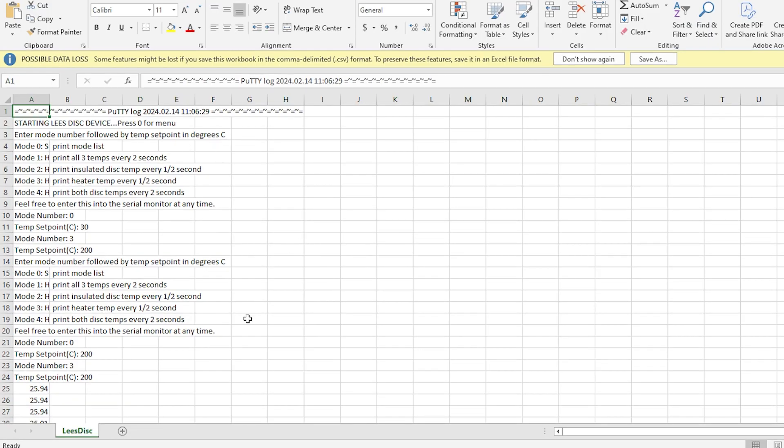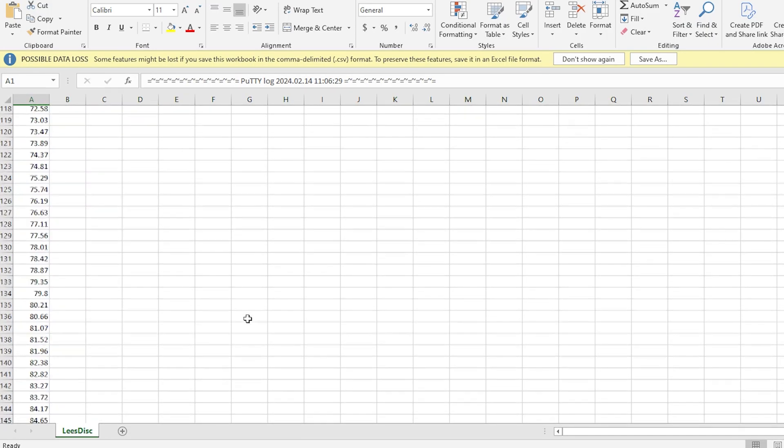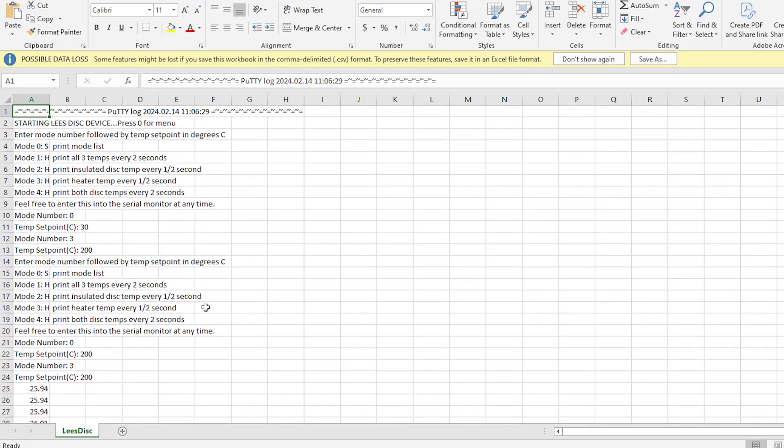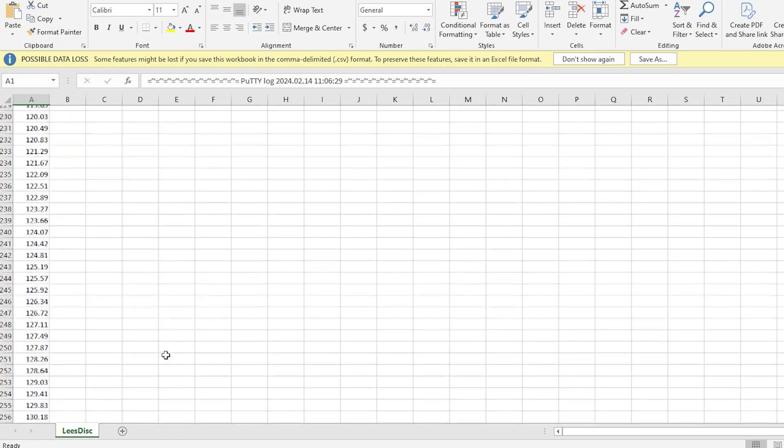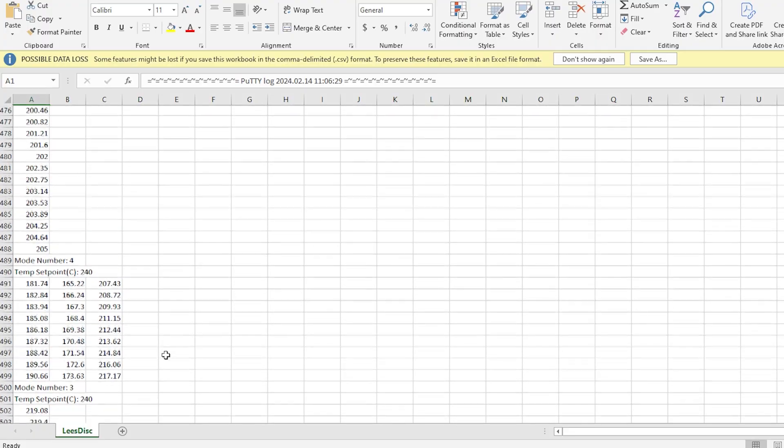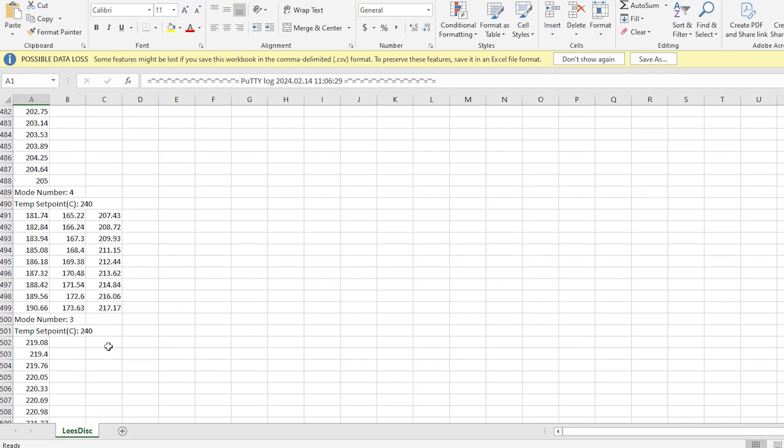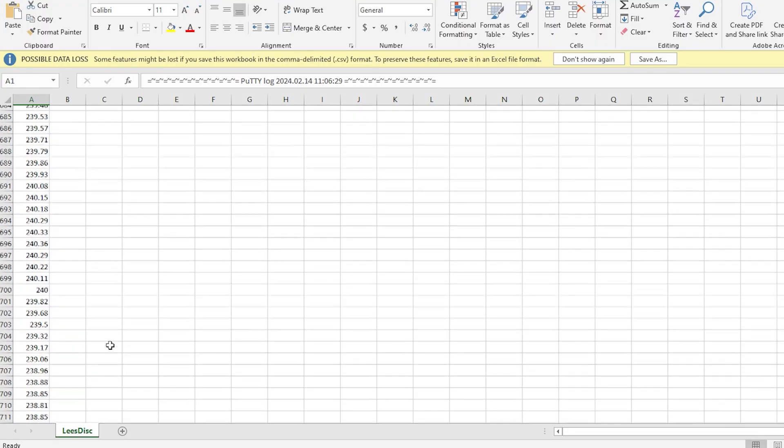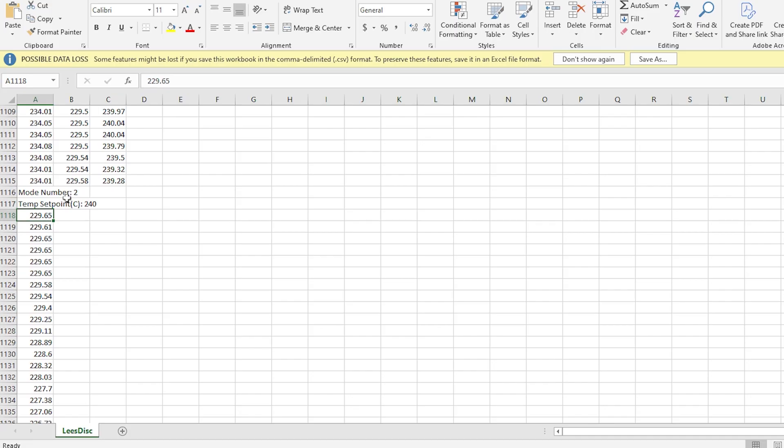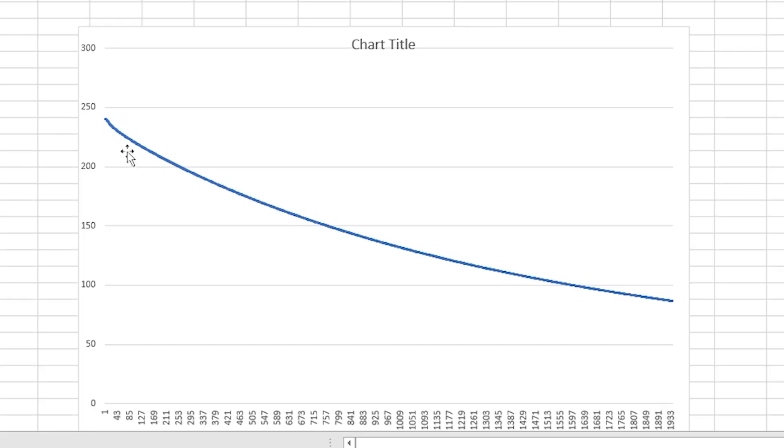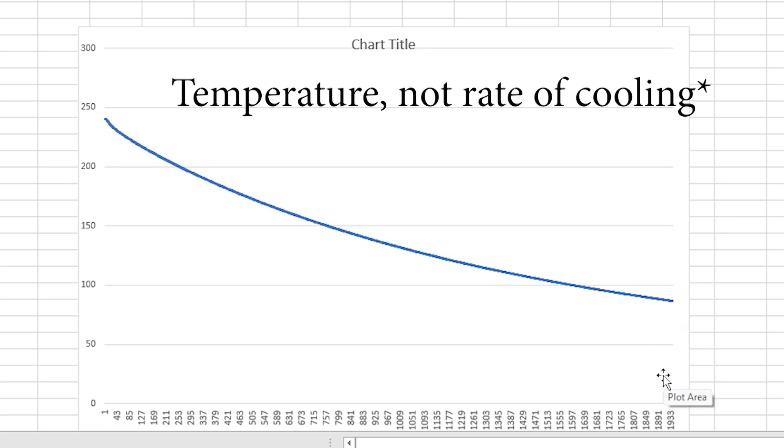This is the data log of everything that was printed in that serial terminal. You can see here at the beginning when the menu shows up and then I set the set point to 200. Down here the set point is switched to 240 degrees Celsius. Here's where the mode is set to 2 and the top brass disk begins to cool on the piece of fiberglass. This graph shows the rate of cooling of the brass disk over the course of 1,933 seconds.